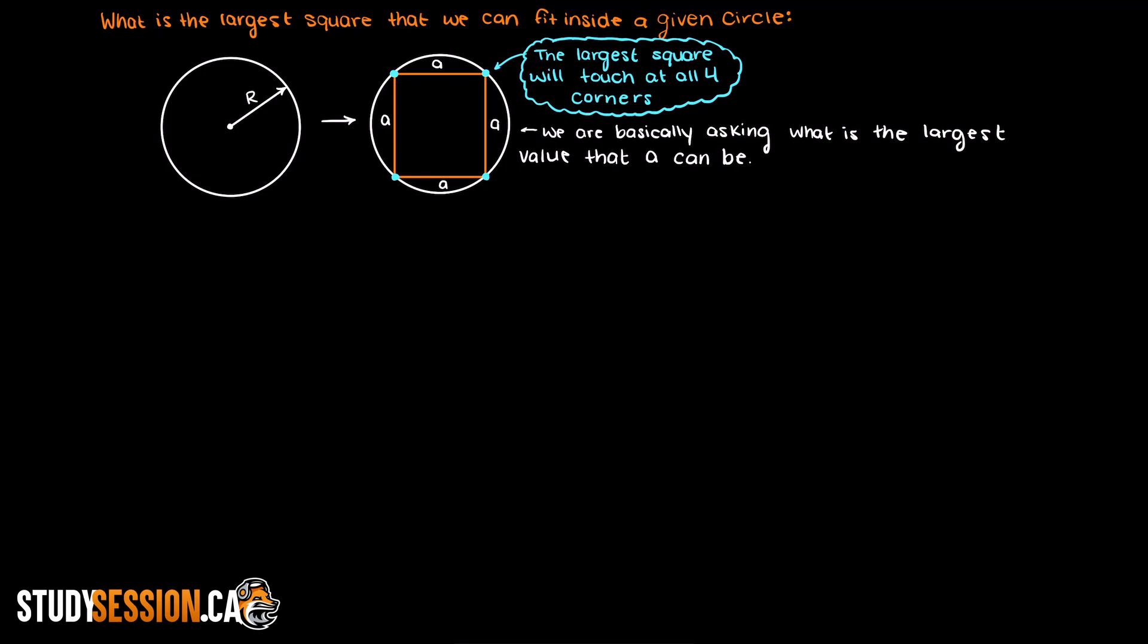So we know what the diameter of our circle will be because we were given the radius, right? The diameter is just two times our radius. So let's draw our diameter of our circle across the diagonal of our square. Now you can notice that we have a right triangle that formed, and because we have a right triangle we can apply Pythagorean's theorem.